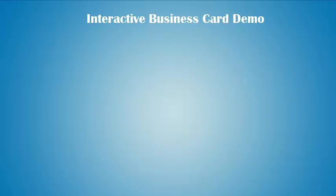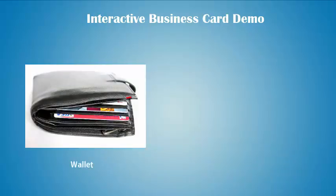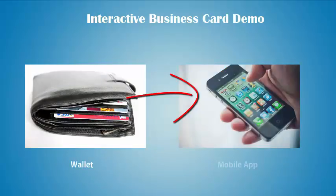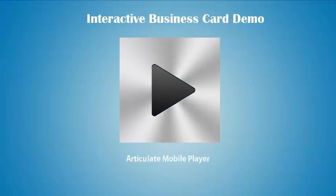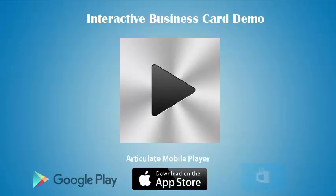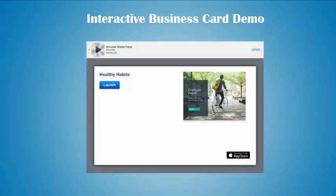Firstly, in place of your normal wallet, we are giving you a link to download a free mobile app to help you manage and organize your interactive business card. So depending on the make of your mobile device, all you need to do is simply go to the respective app store and download the Articulate Mobile Player app — Google Play Store for Android, App Store for iOS, and Windows Store for Windows. To download an interactive business card, you only need to click on the customized link and you will be prompted to either download the Articulate Mobile Player or launch the card to view if you have already installed the app.